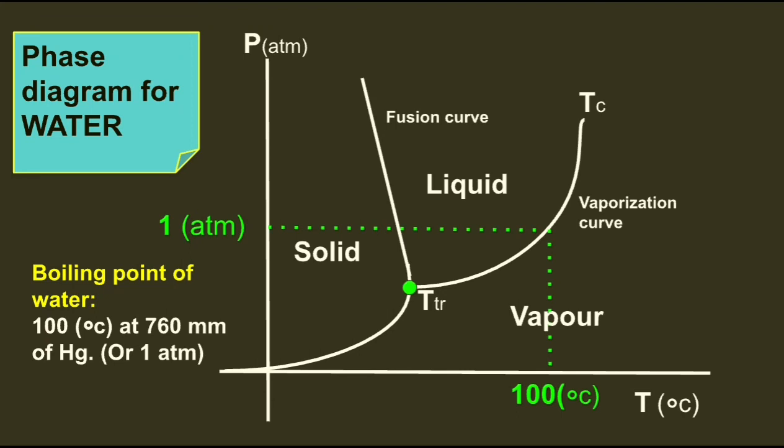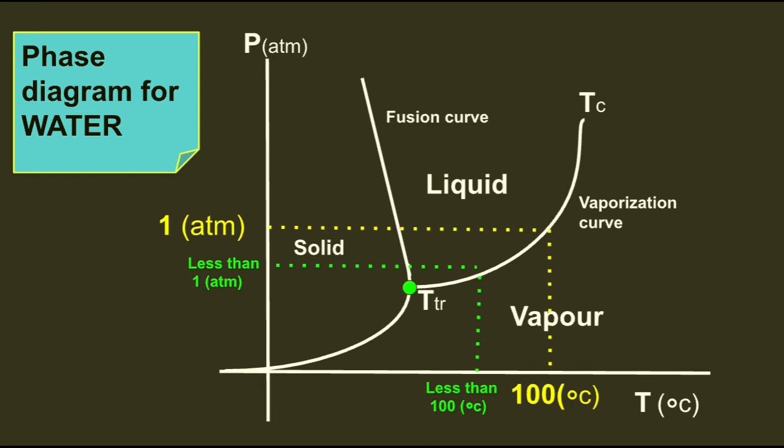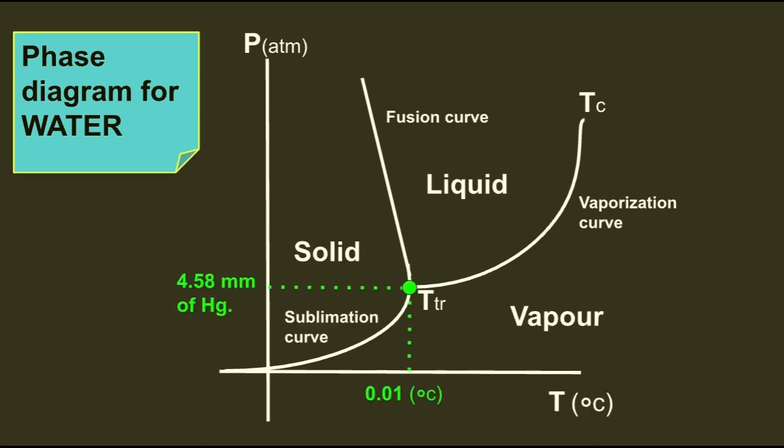Look at this diagram. If there is one atmospheric pressure and 100 degrees Celsius of temperature, then water boils. If we increase the pressure more than one atm, then water will not boil at 100 degrees Celsius—it boils above 100 degrees Celsius. Similarly, if we decrease the pressure less than one atmospheric pressure, then water boils below 100 degrees Celsius. So we can say that even at room temperature, water will boil if we maintain the right pressure.